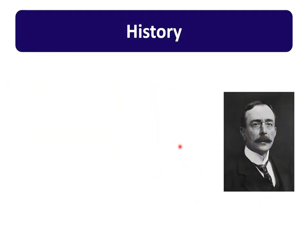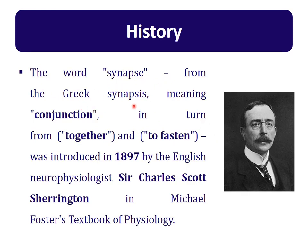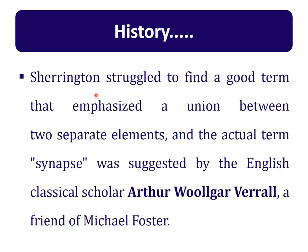First, the history of the synapse. The word 'synapse' comes from the Greek 'synapsis', meaning conjunction — together or to fasten. The term was given by Sir Charles Scott Sherrington in 1897, and he mentioned it in Michael Foster's textbook of physiology. Sir Charles Scott Sherrington discovered the synapse, but the actual term 'synapse' was suggested by the English classical scholar Arthur Woollard, who was also a friend of Michael Foster.